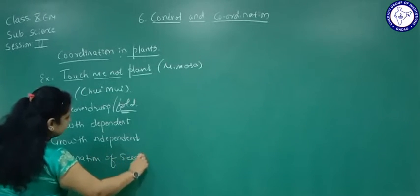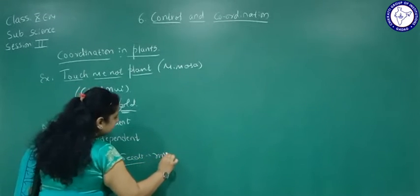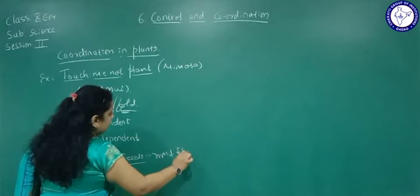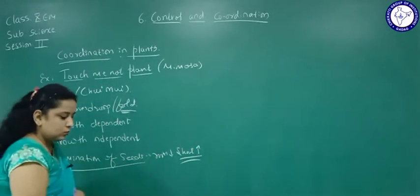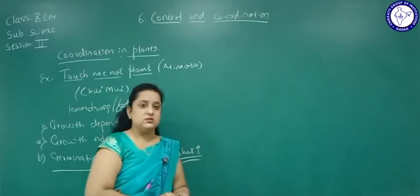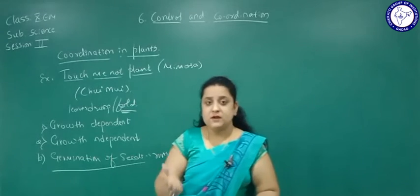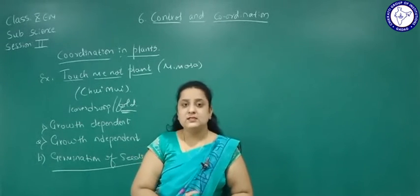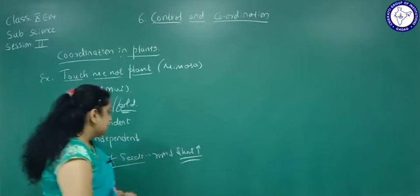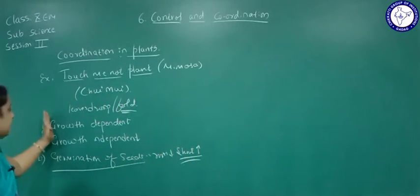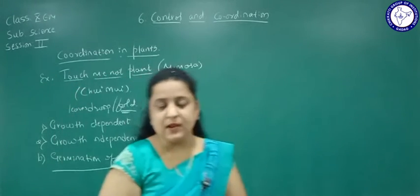When a seed germinates, the roots go below the ground and the shoot goes above the ground level. In the plant system there are two parts: the root system, which is the underground part of the plant, and the shoot system, which is the part above the soil — including stem, branches, leaves, flowers, and fruits. So one type is growth dependent and the other is growth independent.